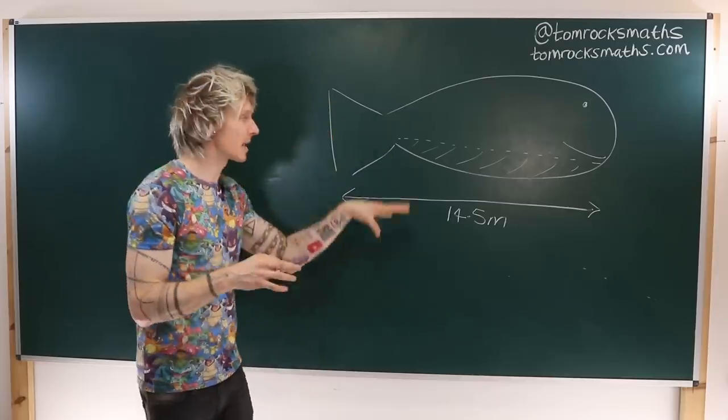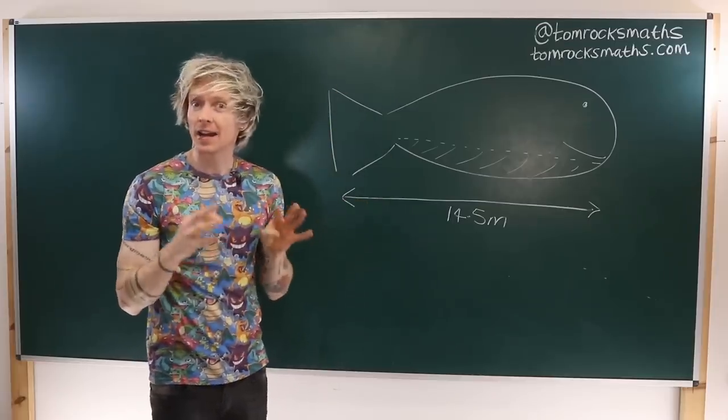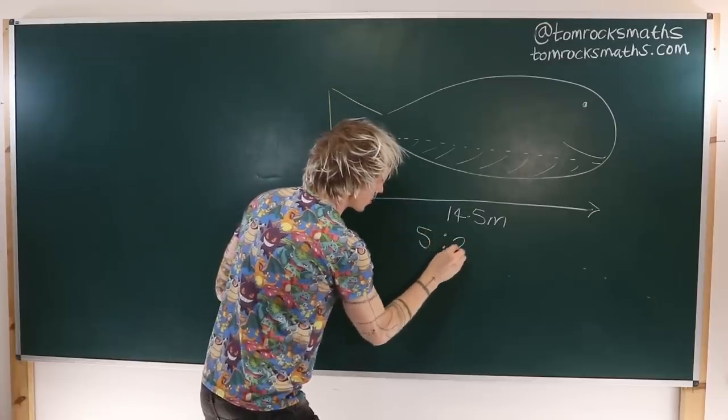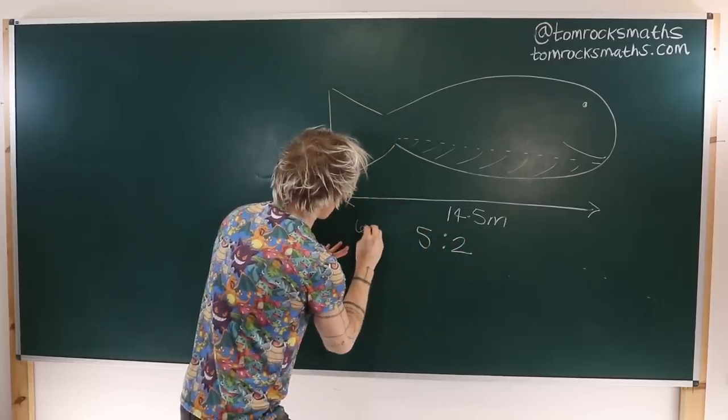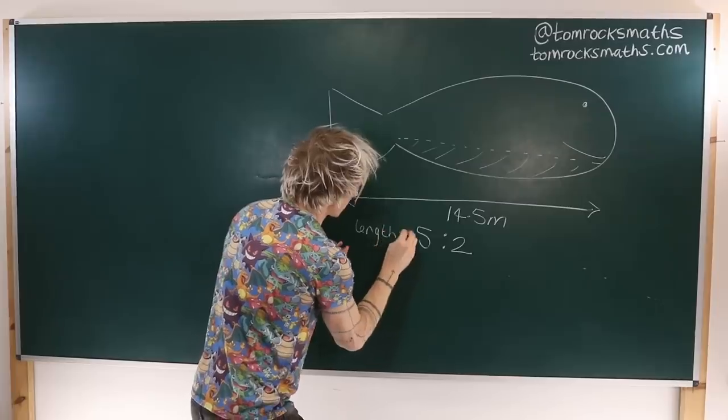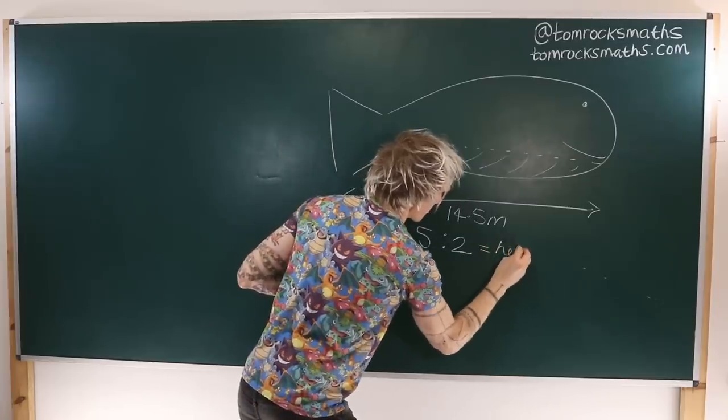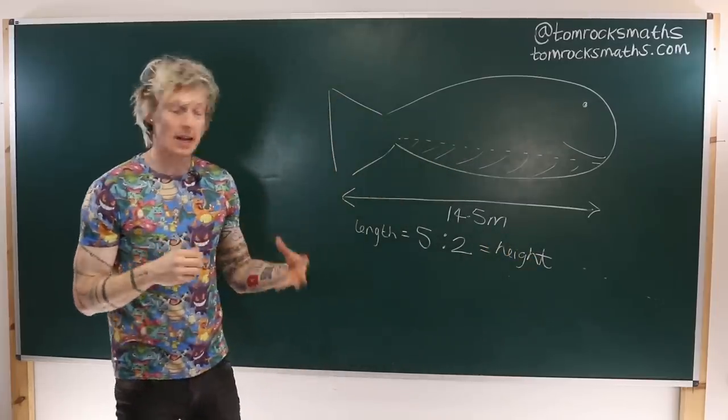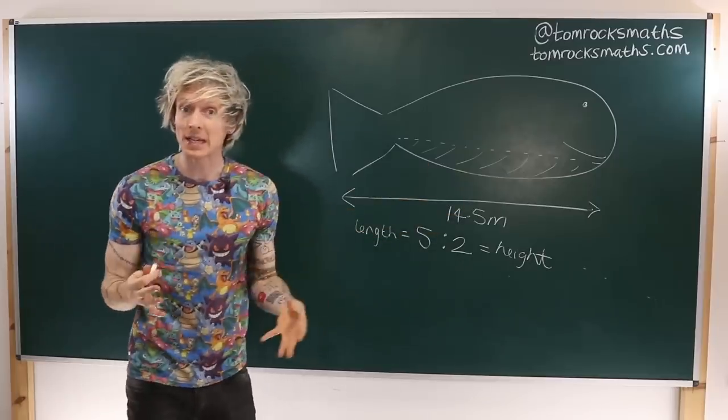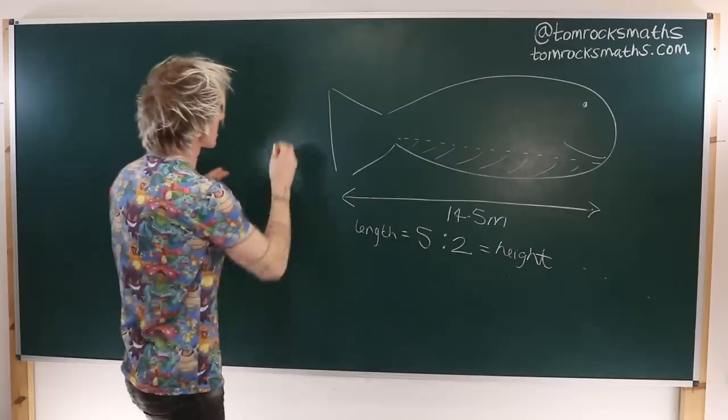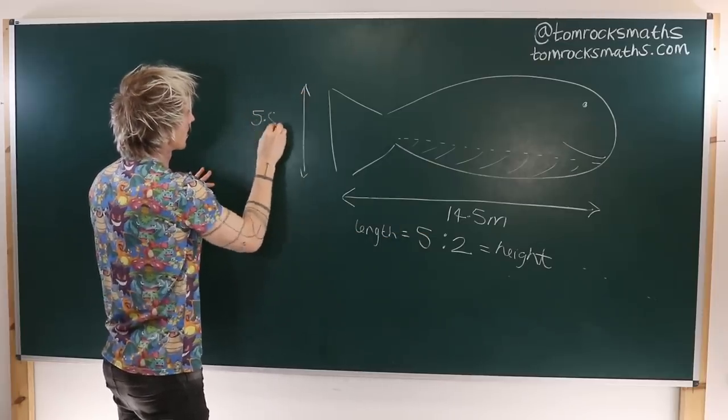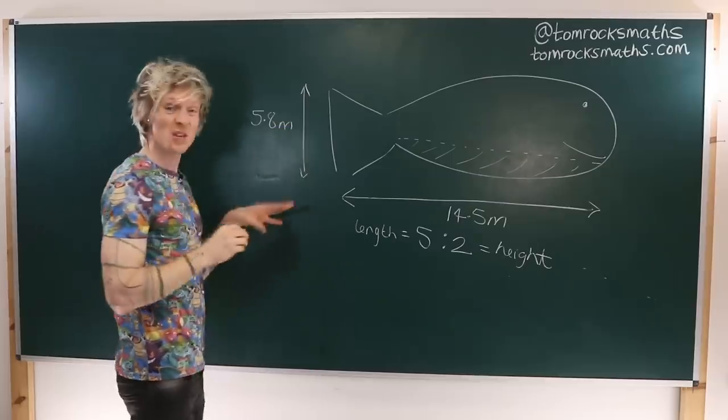So we have this ratio of five to two, which is going to be the length to the height ratio. Now given we know the length to be 14.5 meters, this gives us a height of approximately 5.8 meters. So as expected, Wailord is pretty big.